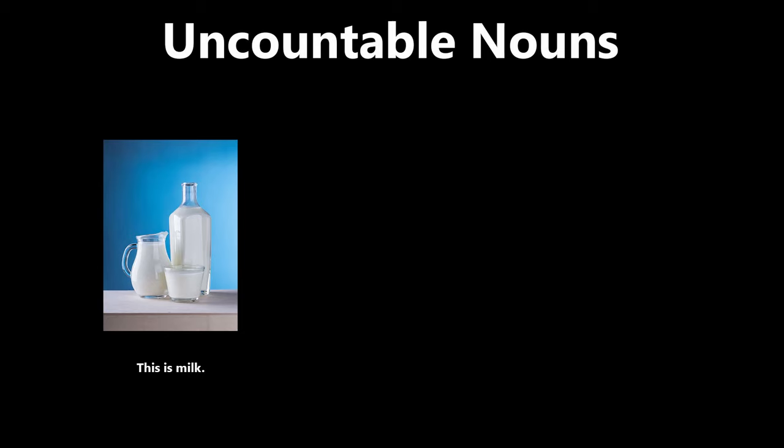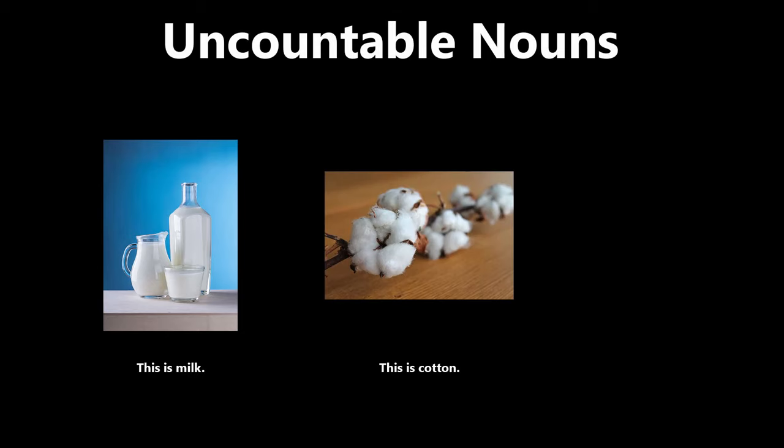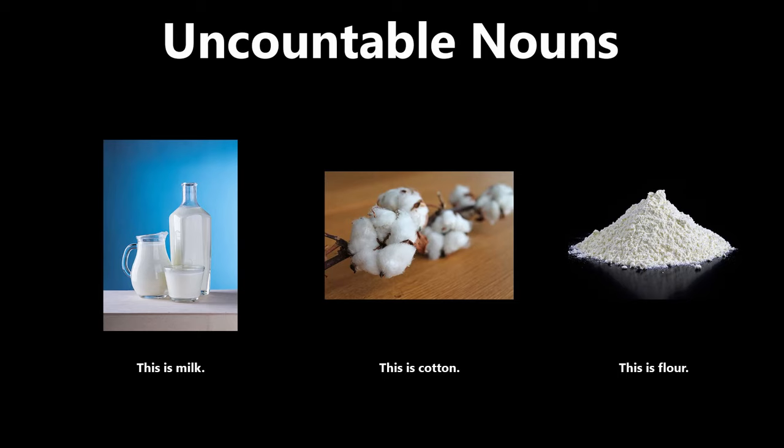Now let's look at uncountable nouns. This is milk. This is cotton. This is flour. You cannot count milk, cotton, or flour. When talking about these types of things, we use the singular form without the word 'a' in front of it.